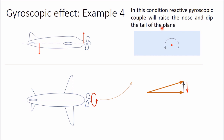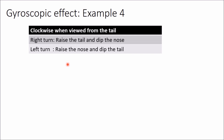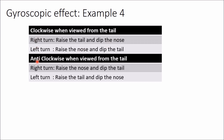If you have difficulty drawing the vector diagram, you can memorize just one condition. Suppose the propeller is rotating clockwise when viewed from the tail: a right turn will cause the tail to raise and nose to dip. For a left turn, just the opposite — raise the nose and dip the tail. If it is rotating anticlockwise when viewed from the tail, make everything opposite to the clockwise-from-tail case.